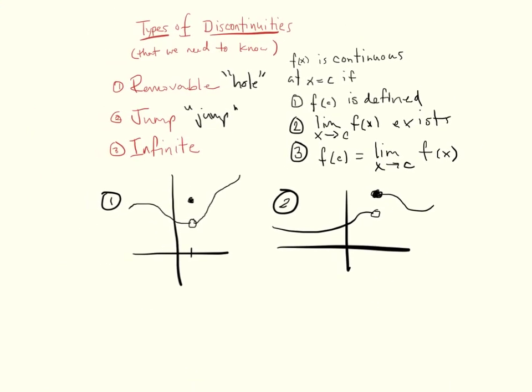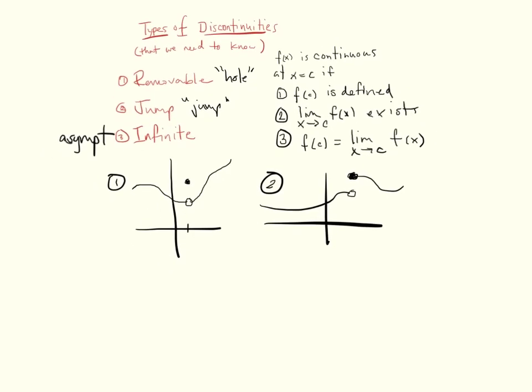It doesn't matter which side gets the hole and which side gets the dot. Finally, infinite is an asymptote. Hopefully we know what an asymptote looks like, but I'll draw it anyway for the sake of completeness. In each case, the thing that's not continuous, or the location where it's not continuous, is going to be labeled c, which is this giant red dot that I am now adding to the x-axis.